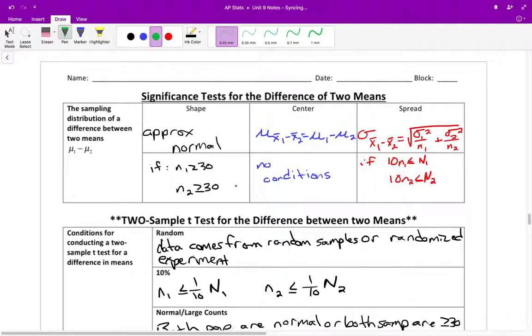For the center, if you're looking for the mean of x bar 1 minus x bar 2, then you just take your population mean for mu 1 minus mu 2, and there are no conditions that you have to check. Spread, when you're looking at standard deviation of the difference, basically you take the square root of one standard deviation squared over n1, plus your second standard deviation squared over n2. And the conditions that you do need to check there is that you need to make sure that 10 n1 is less than or equal to capital N1, and 10 n2 is less than or equal to capital N2. It's the same 10% condition that we've always had to check for spread.